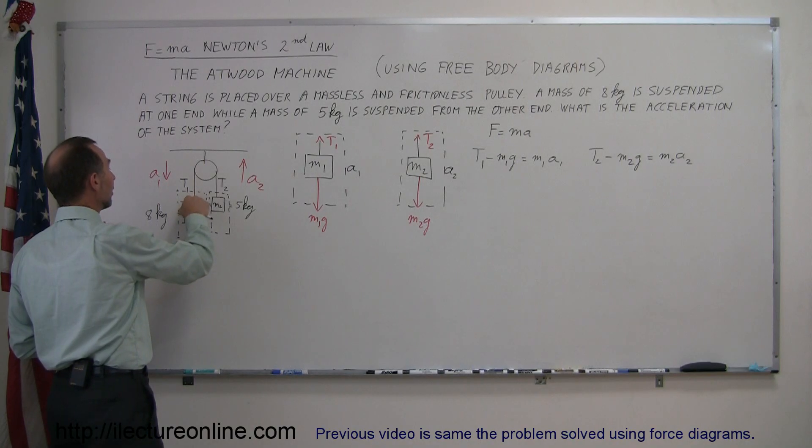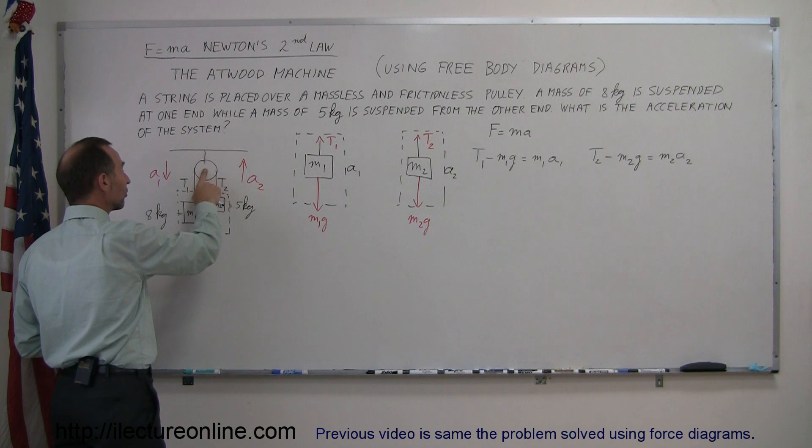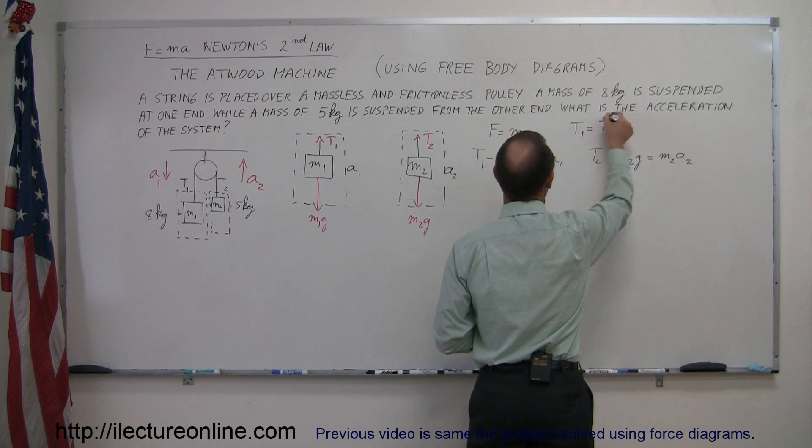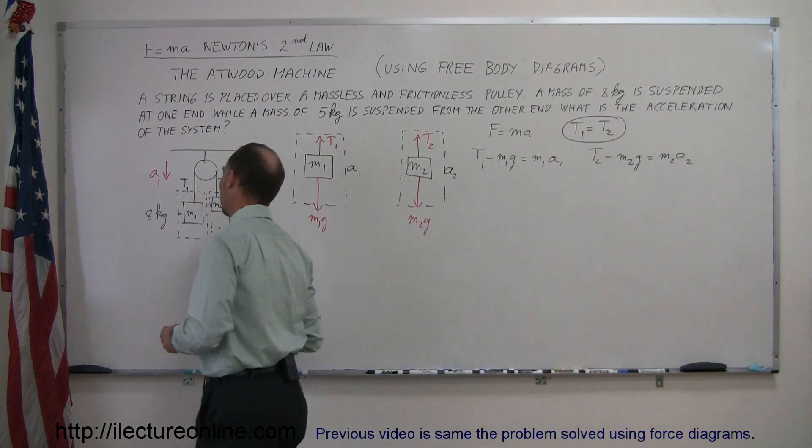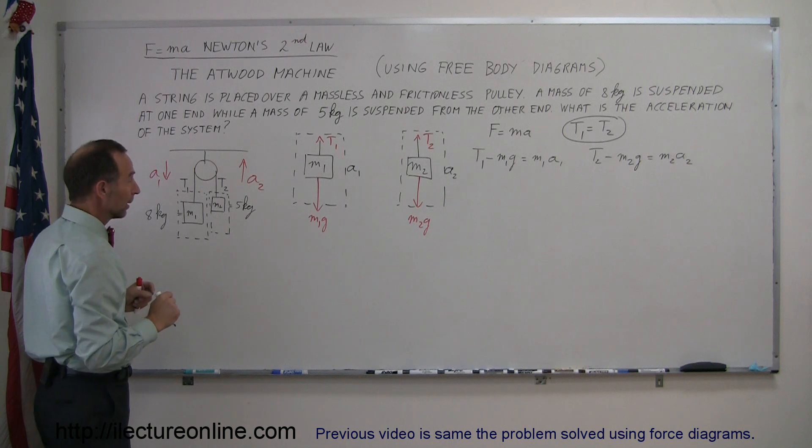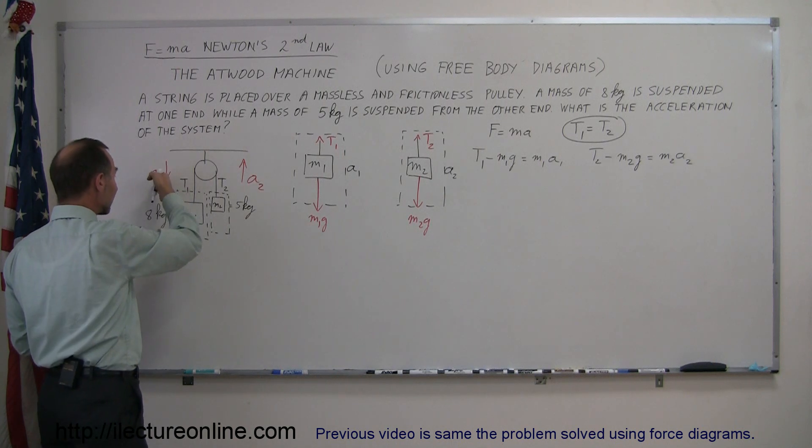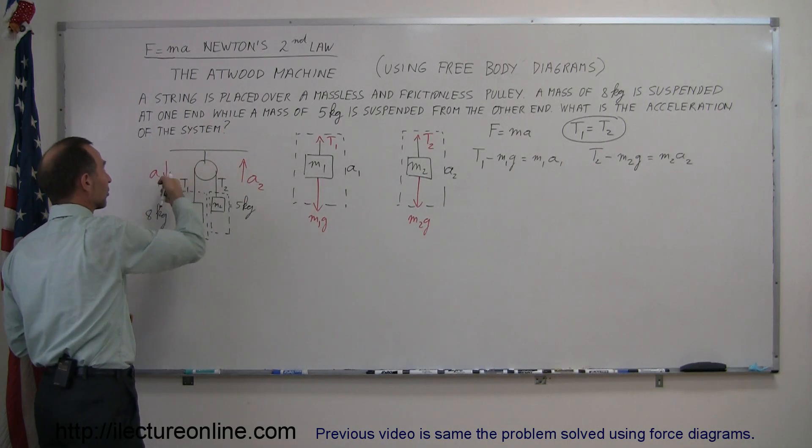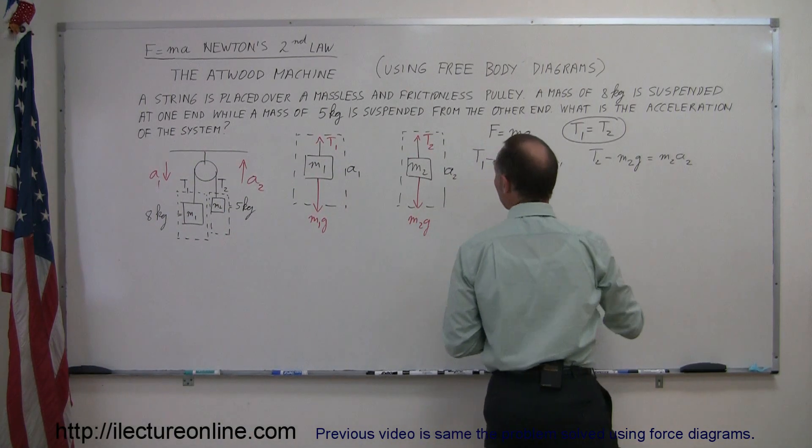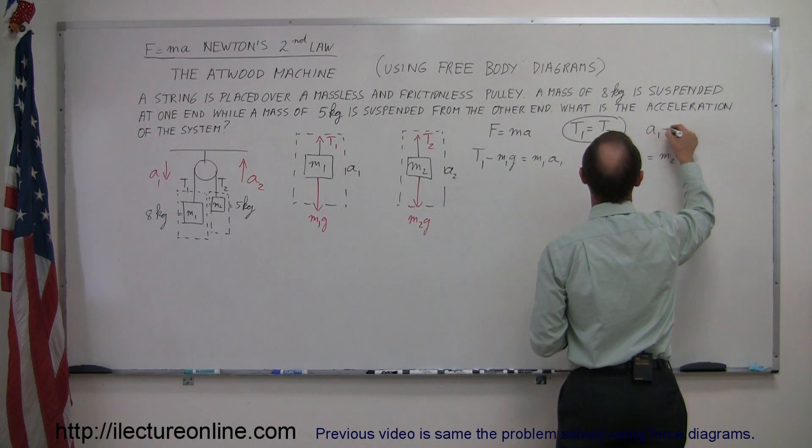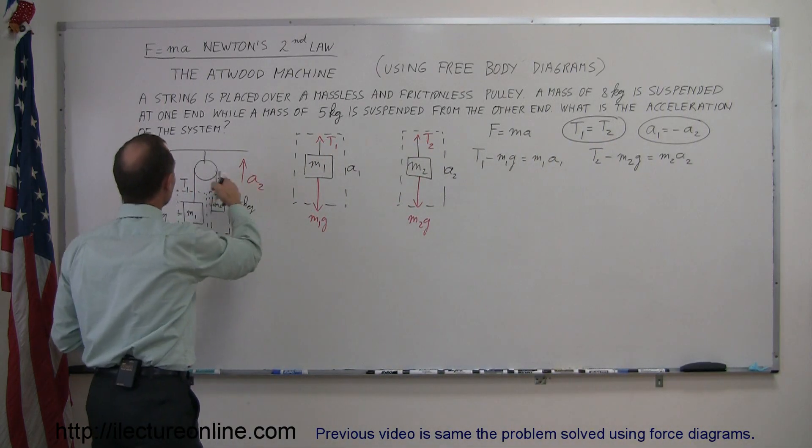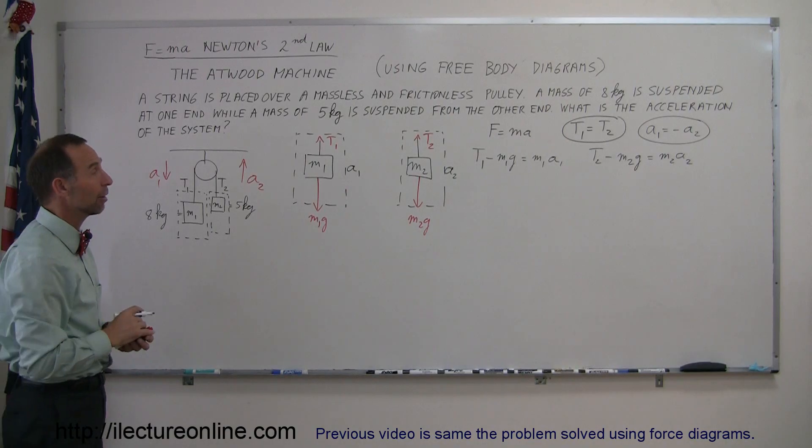Since there's one string here, and the pulley has no mass and no friction, T1 must equal T2. That's a necessary condition for this particular problem. Also, looking at the accelerations, we know that the magnitudes of the accelerations have to be the same. But the signs are different. This one has a negative acceleration, this side has a positive acceleration. So we can say that A1 is equal to negative A2.